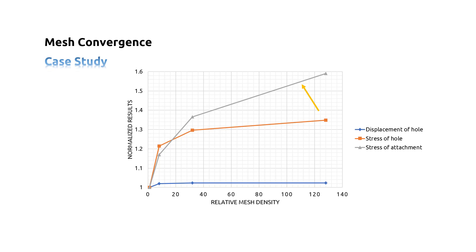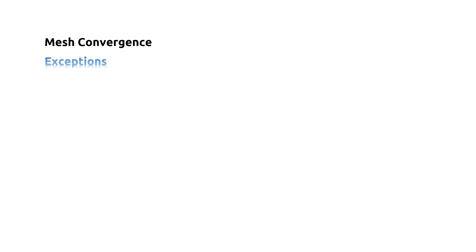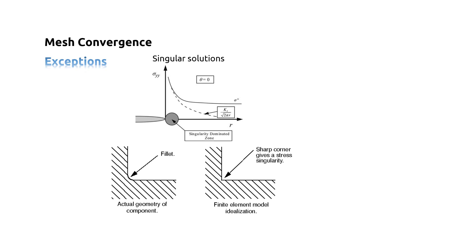According to this issue, now let's talk about mesh convergence rule exceptions. First exception is singular solutions. A stress singularity is a point of the mesh where the stress does not converge towards a specific value. As we keep refining the mesh, the stress at this point keeps increasing. Theoretically, the stress at the singularity is infinite.